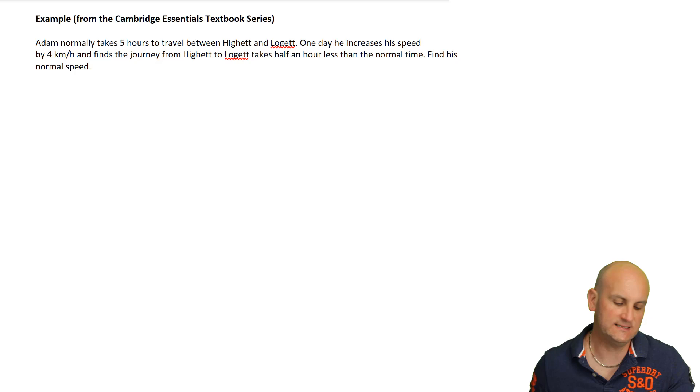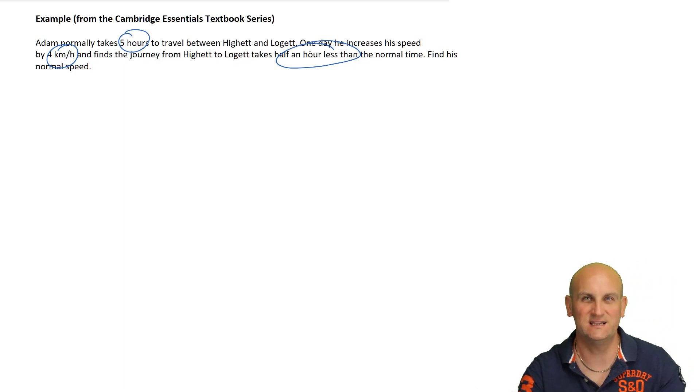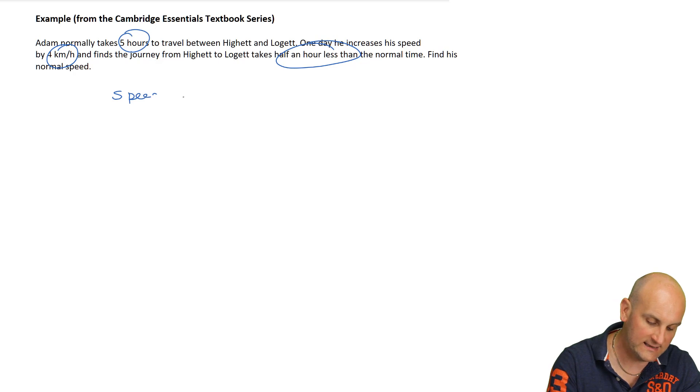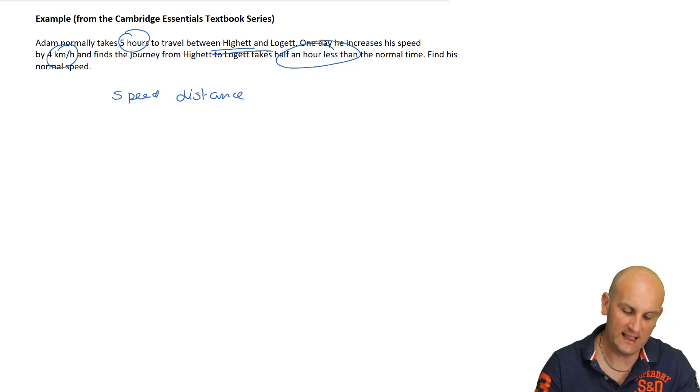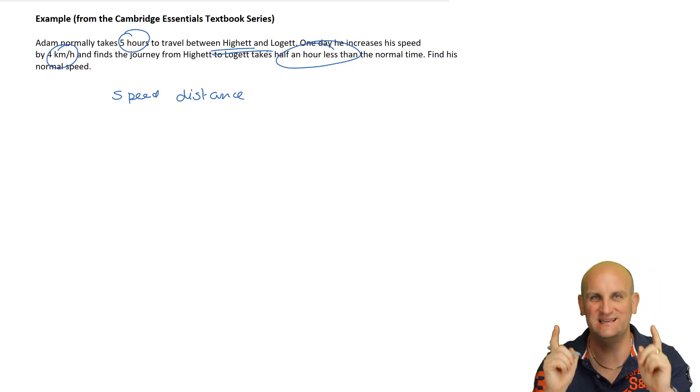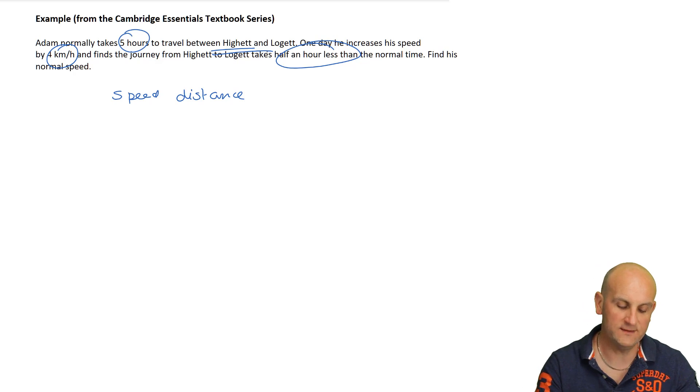Final example for this video: Adam normally takes five hours to travel between Hyatt and Logitt. One day he increases his speed by four kilometers an hour. So obviously this five hours is going to be important. We're talking about speed as four kilometers per hour, and finds the journey from Hyatt to Logitt takes half an hour less than his normal time. Find his normal speed.